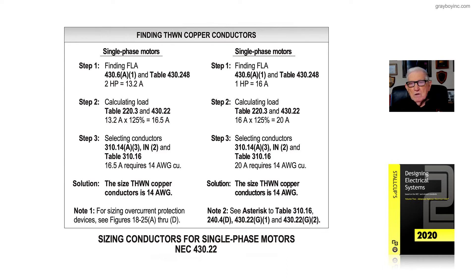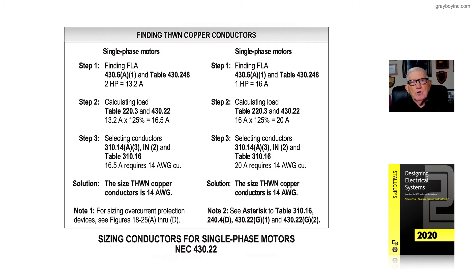Step two: go to Table 220.3. That table references certain sections based upon the type of equipment or load you're dealing with, giving you the percentage used to determine the full-load amps for any particular piece of equipment. Notice it's 125%.